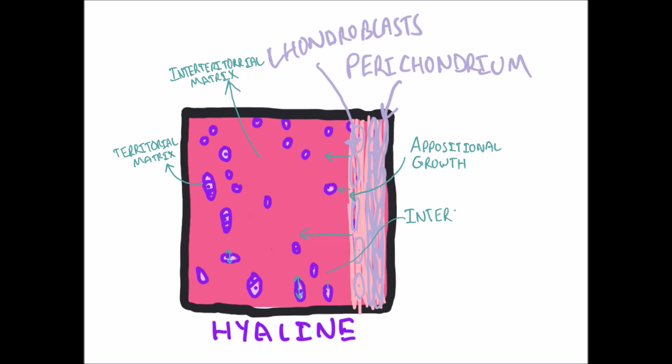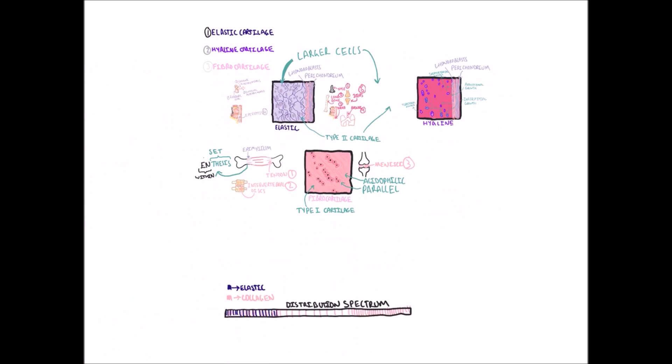The second term is interstitial growth, which is an increase in the internal mass of cartilage by activity of chondrocytes that multiply within lacunae.